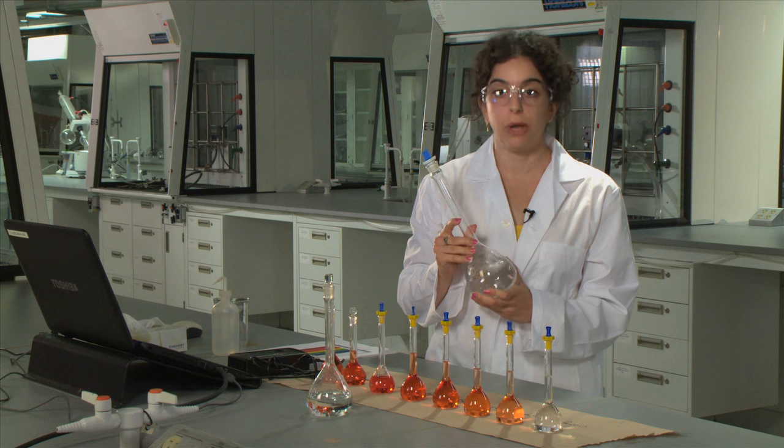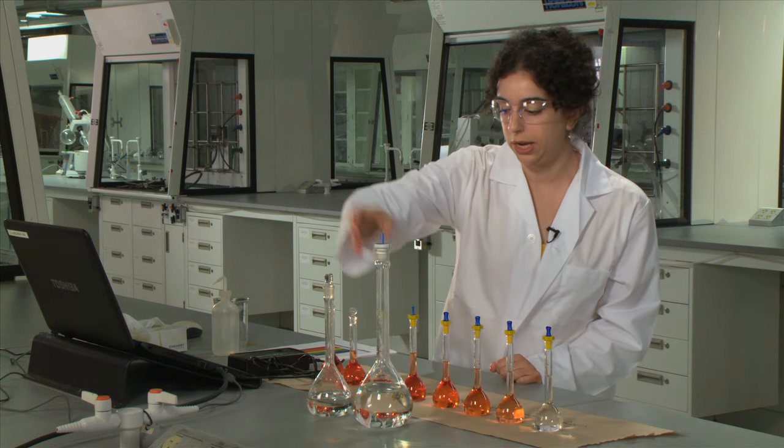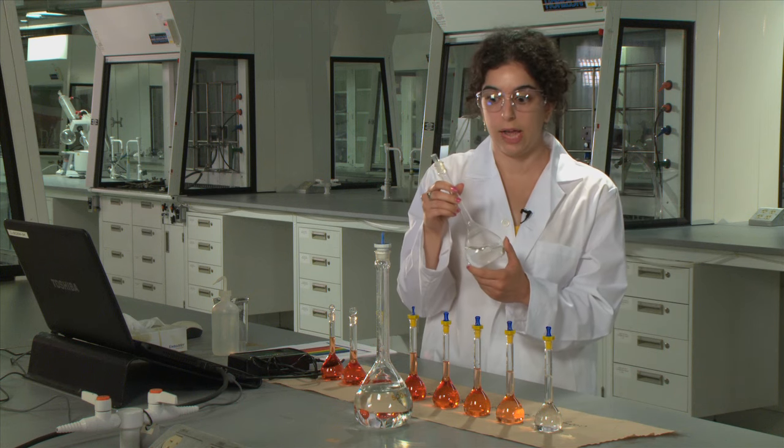This contains a known amount of iron. The other flask that you will prepare is the unknown sample and that will be done in a 250 milliliter volumetric flask.